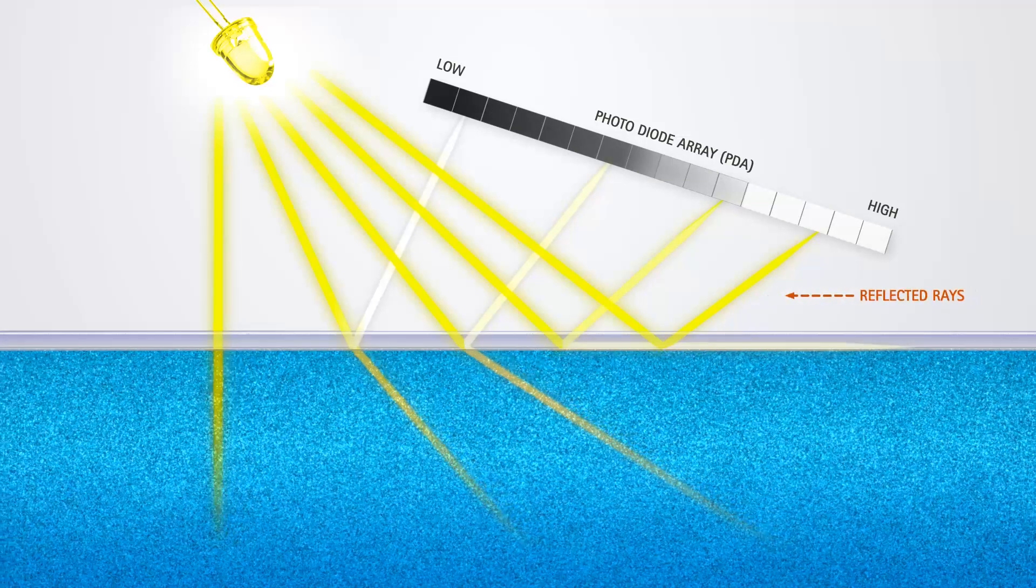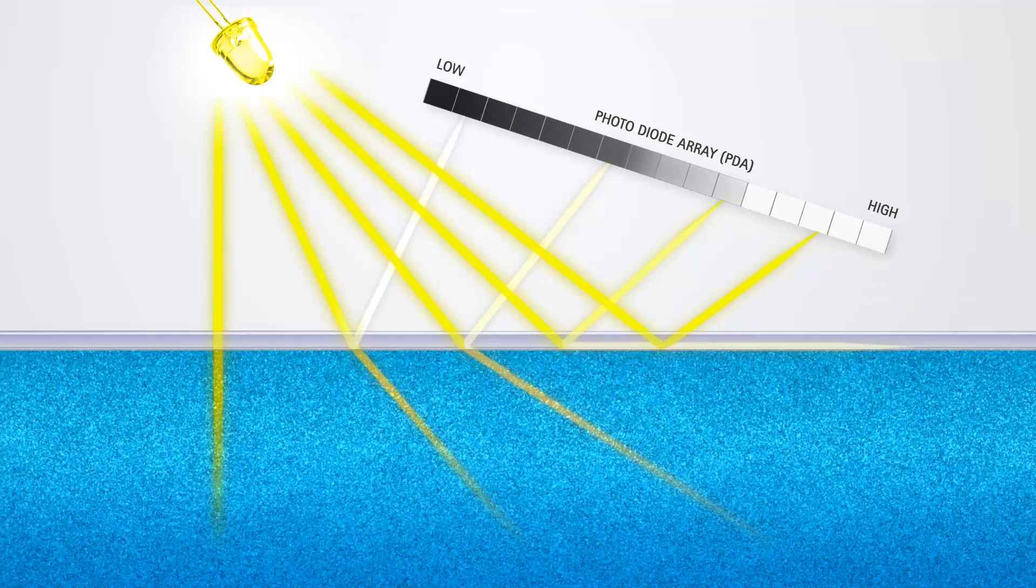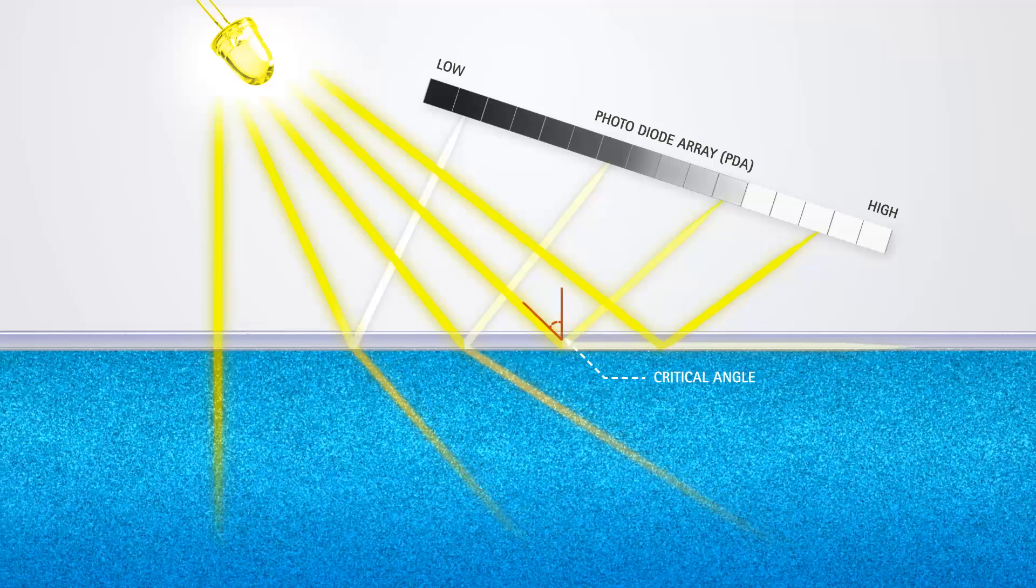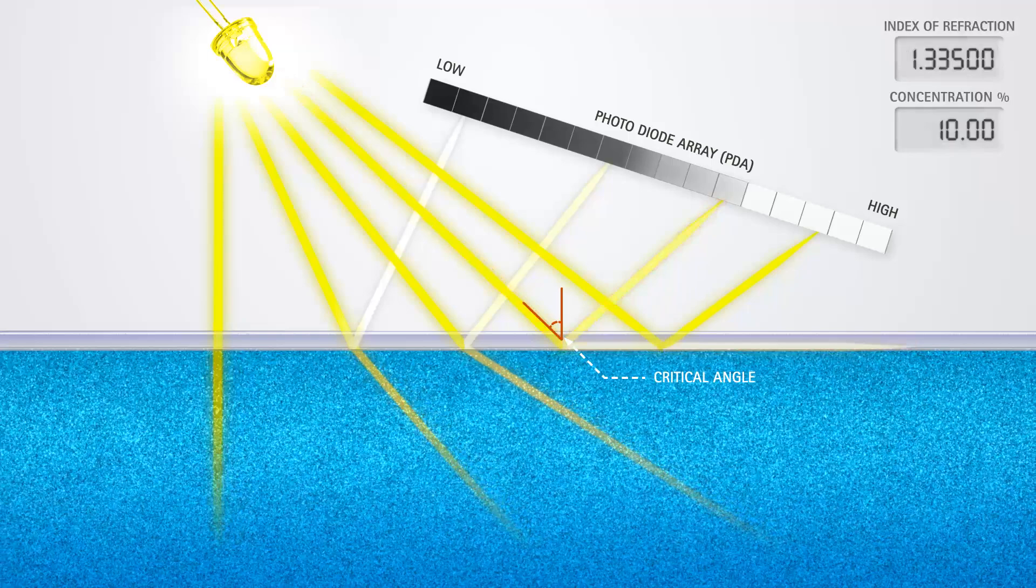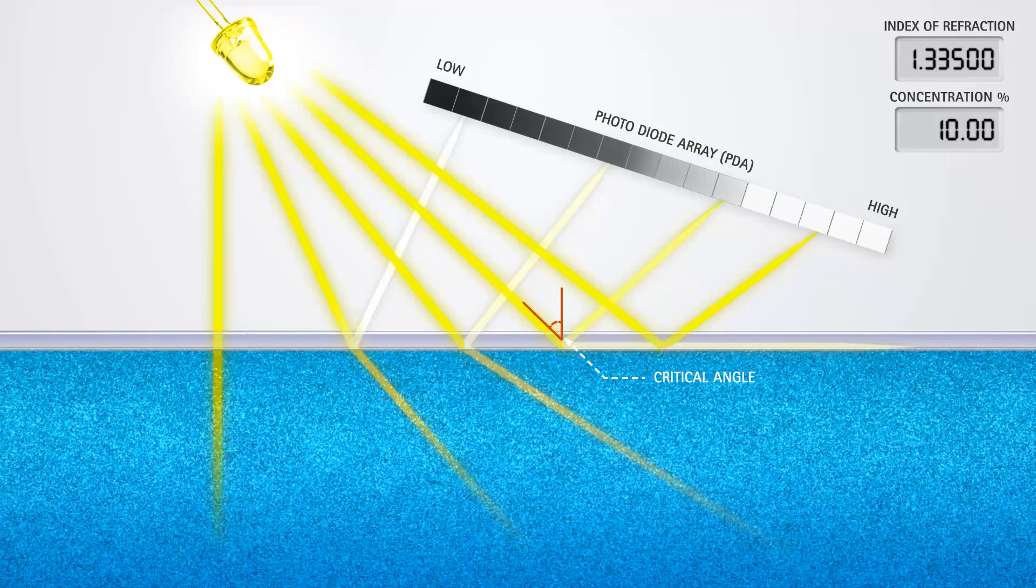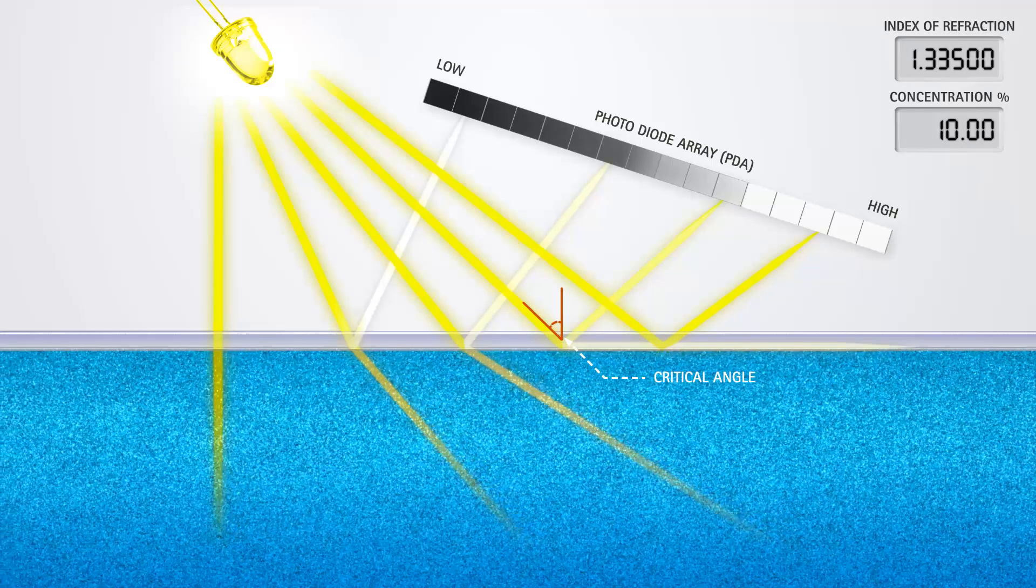At a critical angle, the light no longer refracts into the liquid, but completely reflects back to the PDA. The Index of Refraction is calculated from the critical angle using Snell's Law.